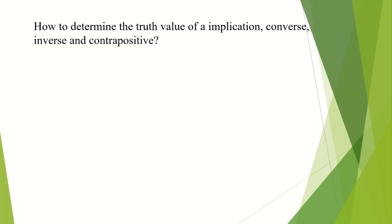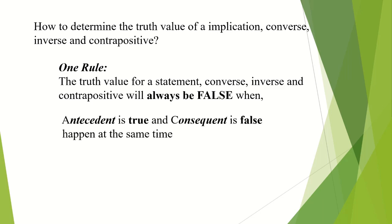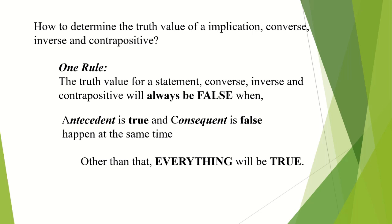Next, we will try to determine the truth value of an implication, converse, inverse, and contrapositive. There is one rule you have to understand: the truth value for a statement, converse, inverse, and contrapositive will always be false when the antecedent is true and the consequent is false at the same time. Other than that, everything will be true.